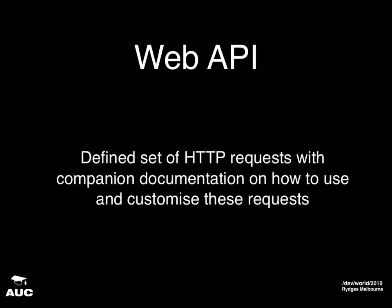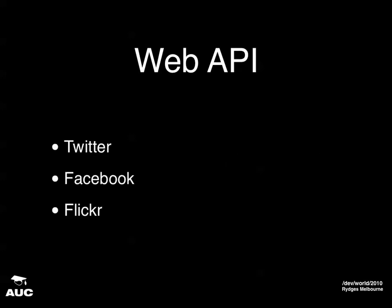That brings me to web APIs. In this context, a web API is a set of HTTP requests that you can use to access data from within a service. Examples could be things like Twitter, Facebook, or Flickr. These services give you extensive information on how to interact with them, usually linked to resources which you can use to call into your apps. Once you get the data back, you can display it however you like. You can even set up your own servers for testing using the method I'll show you later.